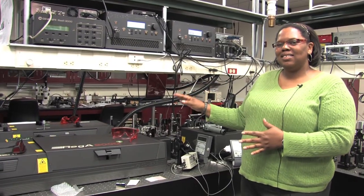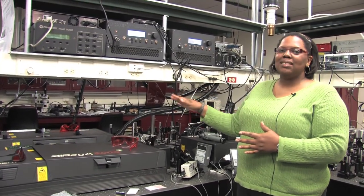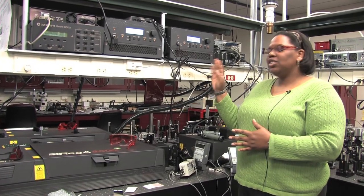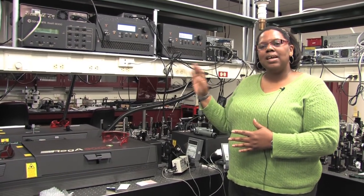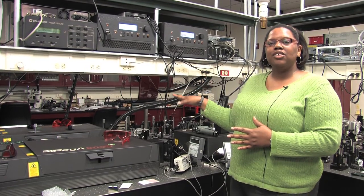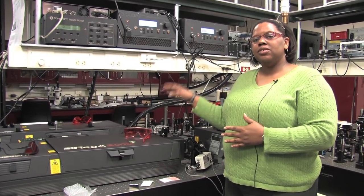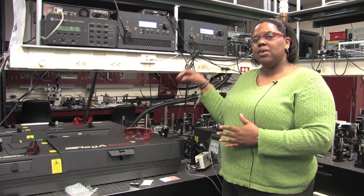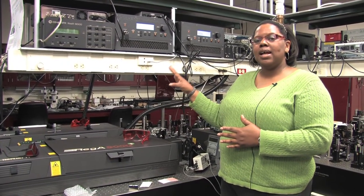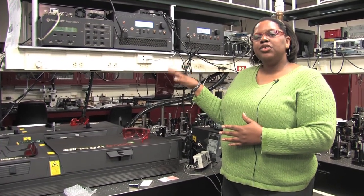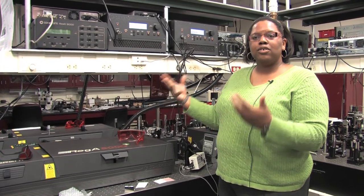The femtosecond laser system consists of a Ti:sapphire oscillator, which is tunable from 750 nanometers to 900 nanometers. We then, right now, it's operating at 800 nanometers. We take the 800 nanometers and we amplify it. So, right now, it goes from energy per pulse of nanojoules to microjoules.